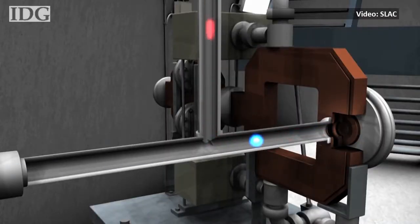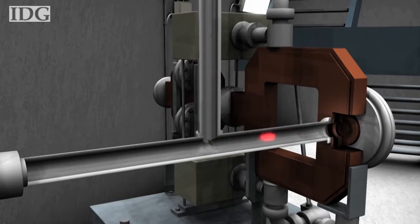Here's how it works. A laser generates a pulse of UV light that travels down and strikes the surface of a copper plate. This turns the light into a burst of electrons, seen in blue, which enter the linear accelerator.